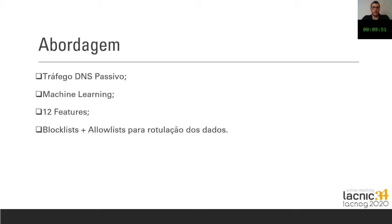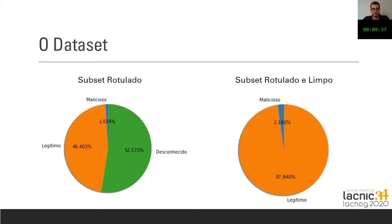There are 12 features in this passive DNS traffic that I will be speaking about. For the use of this data, we use a block list plus allow list in order to determine whether these domains were already classified, so that the machine learning classifier can learn from this.